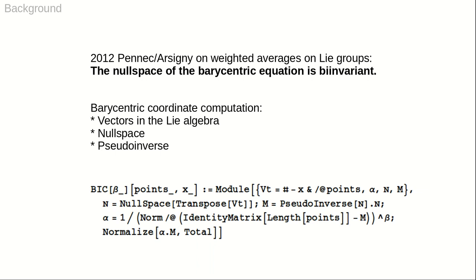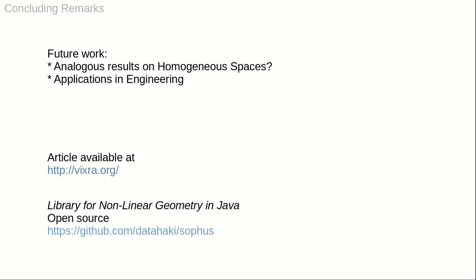The displayed code in Mathematica is specific to the Euclidean vector space. In the future, we plan to investigate weighted averages and barycentric coordinates on general homogeneous spaces. We also plan to study how barycentric coordinates on Lie groups fare in engineering applications, for instance in robotics. Our article as well as the source code are available online.